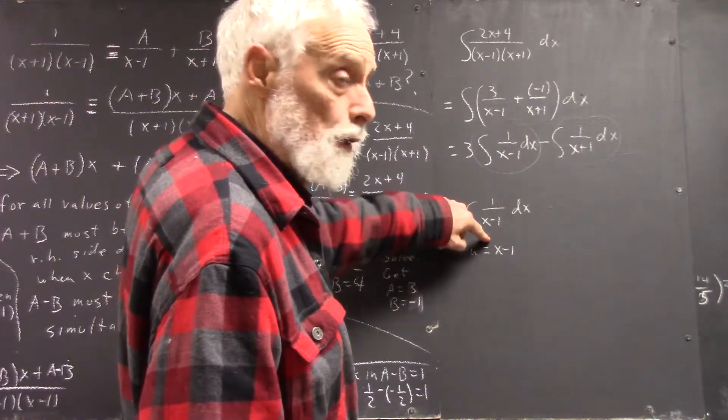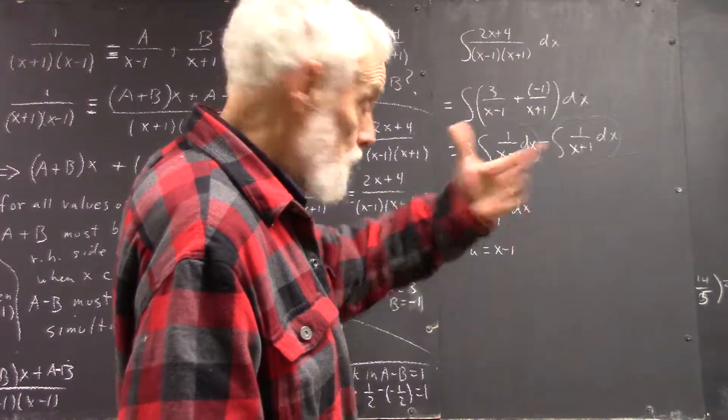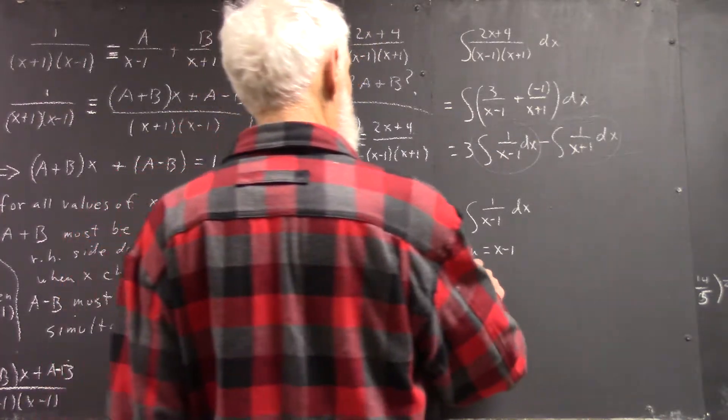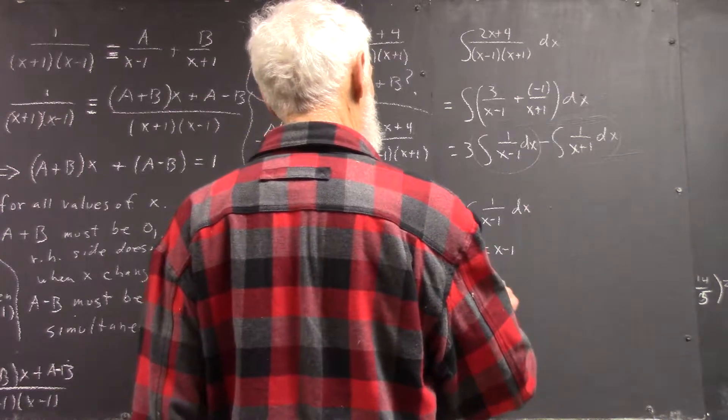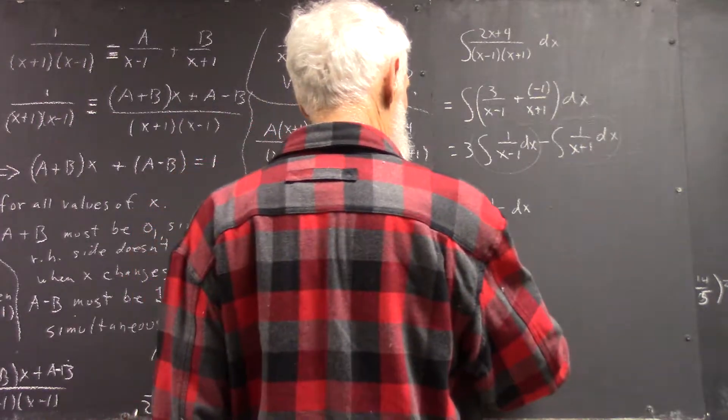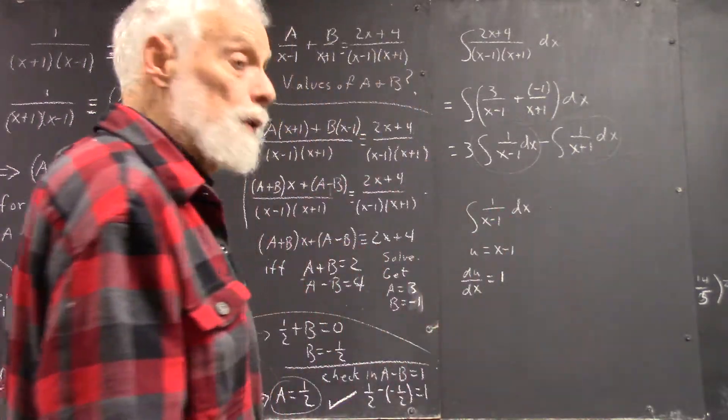Just for example, integrating 1 over x minus 1 dx, you saw immediately you're going to use u equal x minus 1. Well, the way I've been writing this out, for completeness I'll write it out this way, although you can skip the step here and that's fine because you skipped it correctly. du dx equals 1, right?